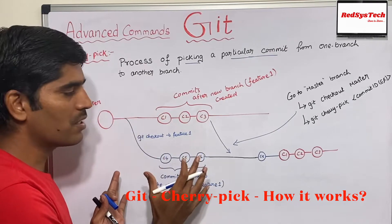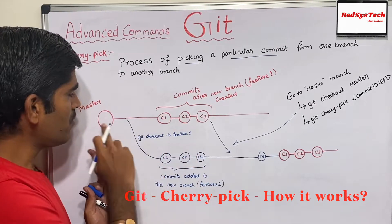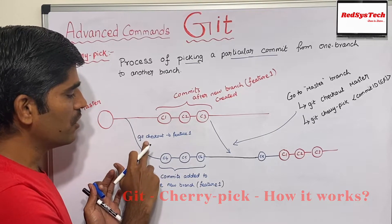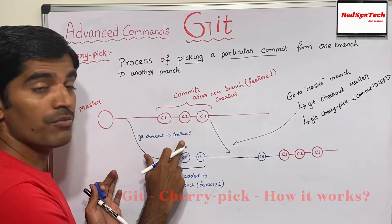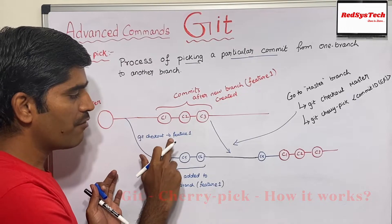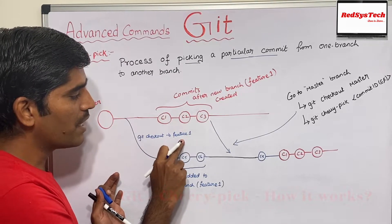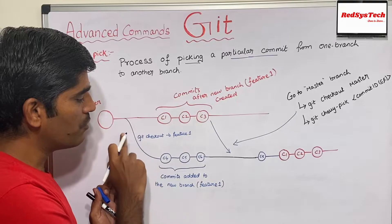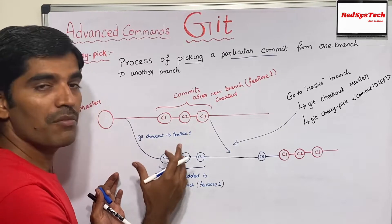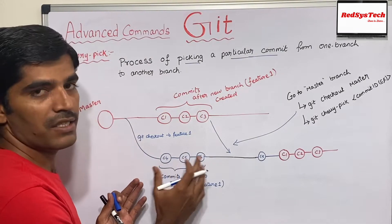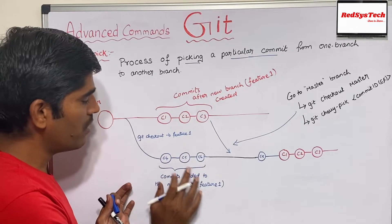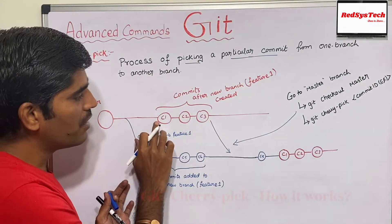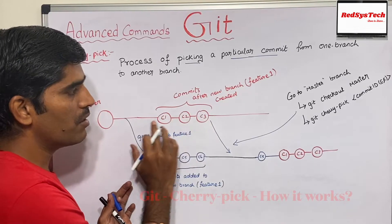So how does it actually work? Let's assume this scenario. Let's say we have a master branch. From this master branch, you are cutting and taking another new branch called Feature 1. So basically, you are creating a new branch called Feature 1, switching to it, and making some commits: C4, C5, C6, something like that. These changes are made after you branch from master. And you already have C1, C2, C3 in the master branch.